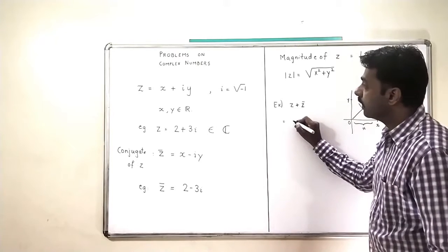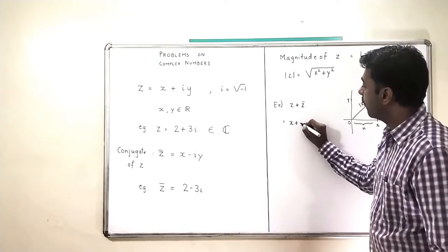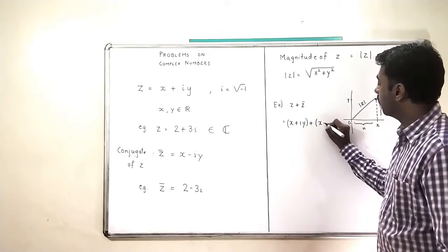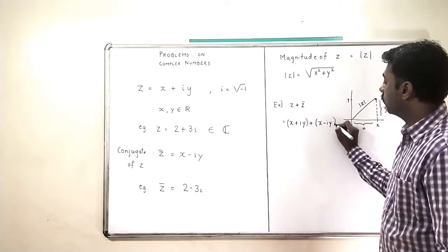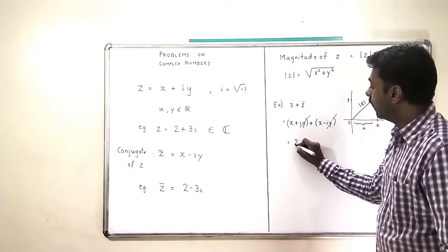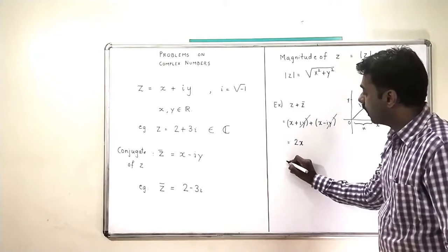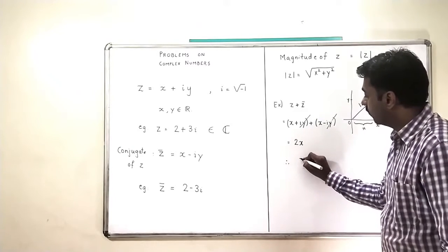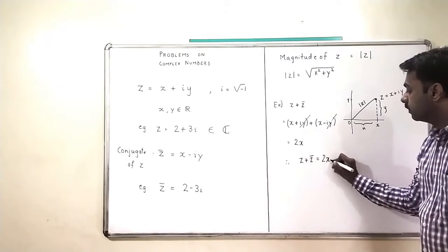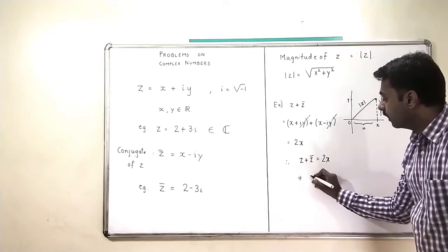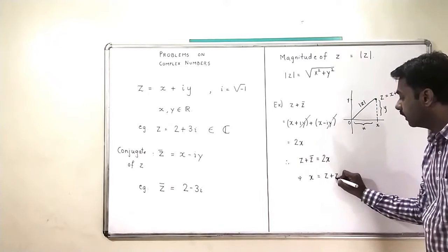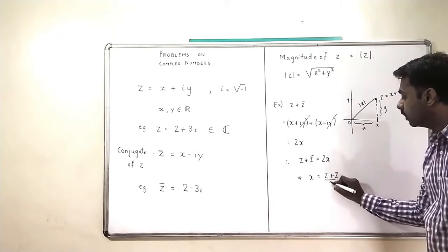So I will write Z is equal to X plus iY, and what is Z bar? Z bar is X minus iY. The iY component will cancel, and we will get 2X. So we are concluding that Z plus Z bar is 2X.